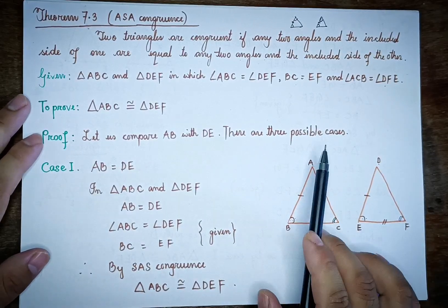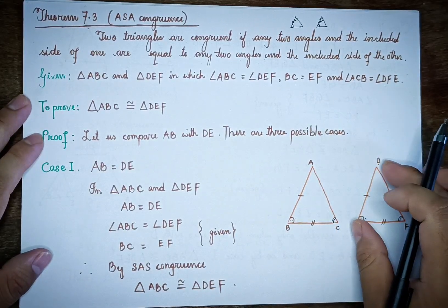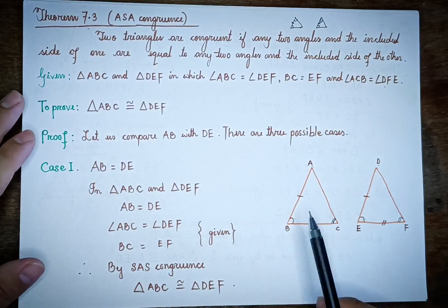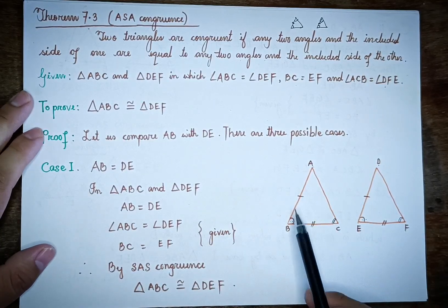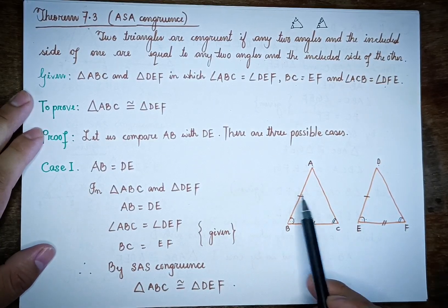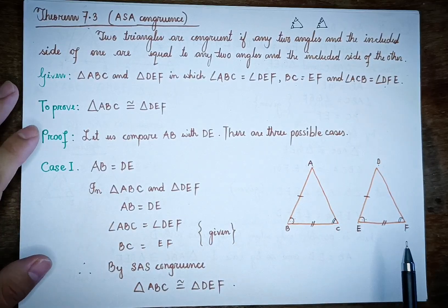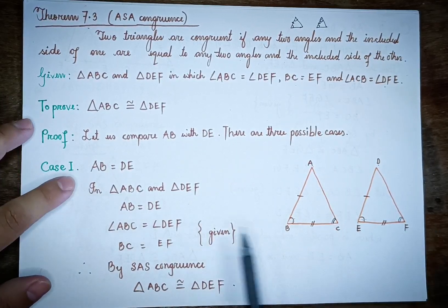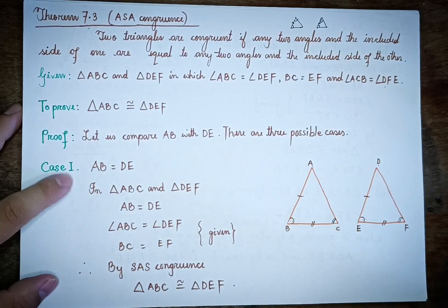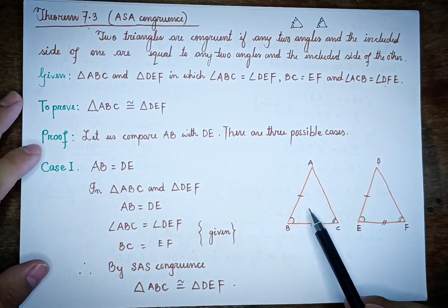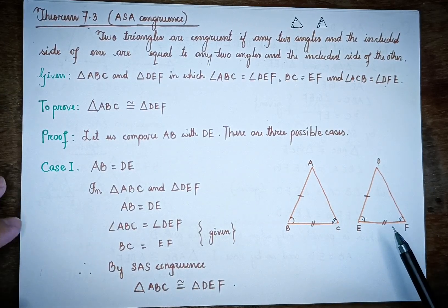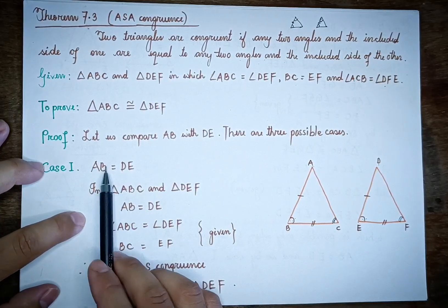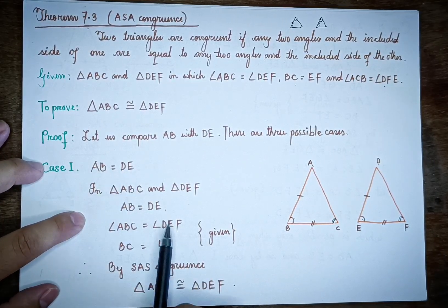Case 1: AB and DE are the same. Triangle ABC and triangle DEF share the condition that AB equals DE. This is section one of the proof.